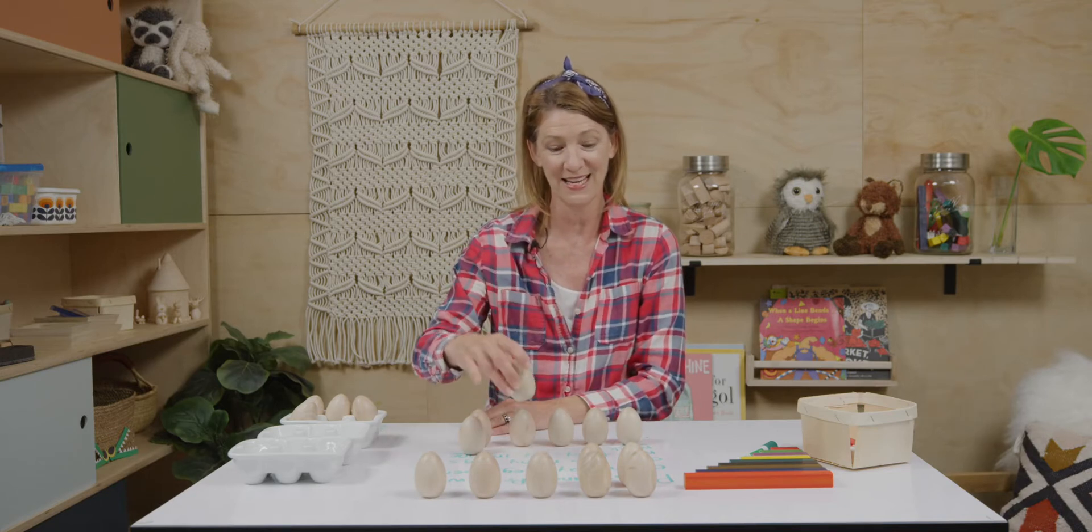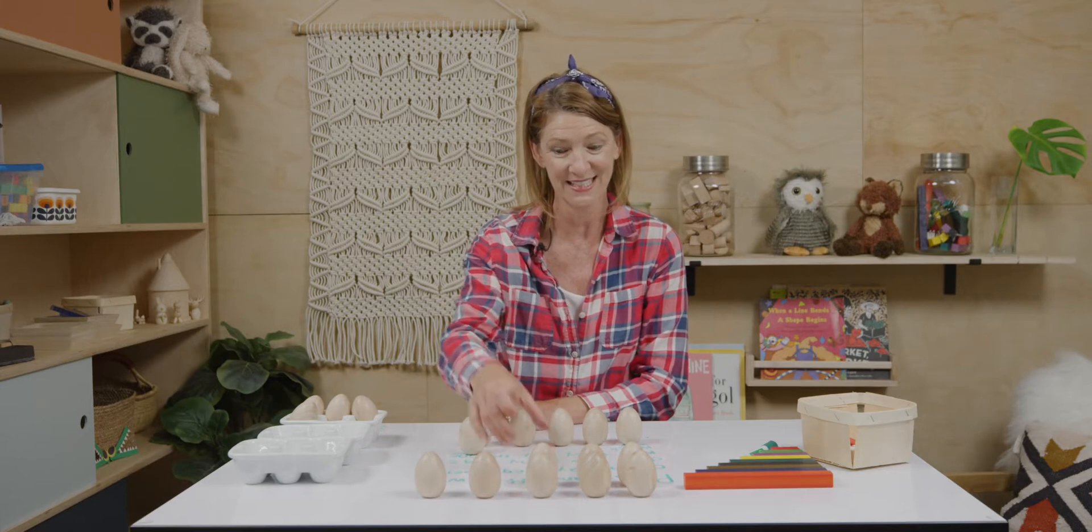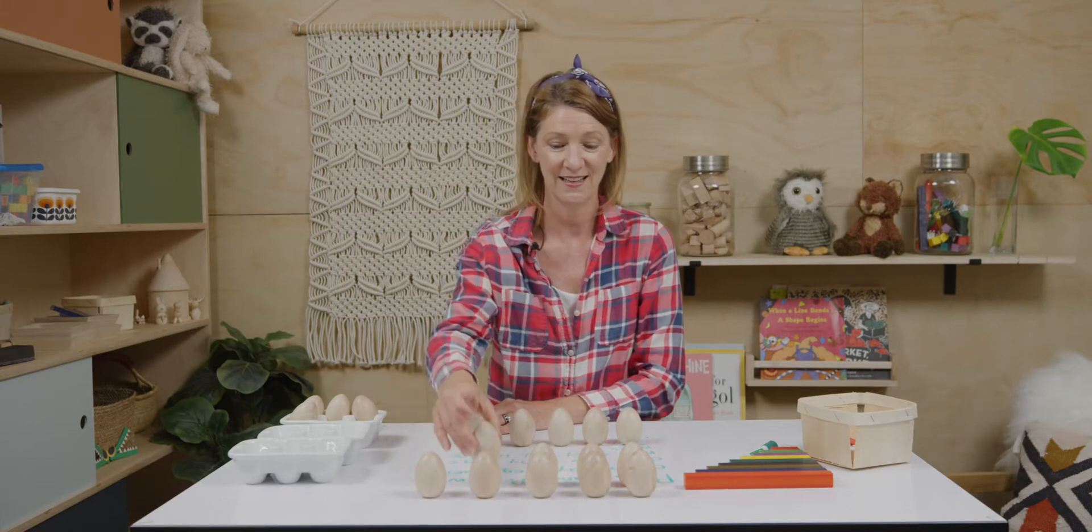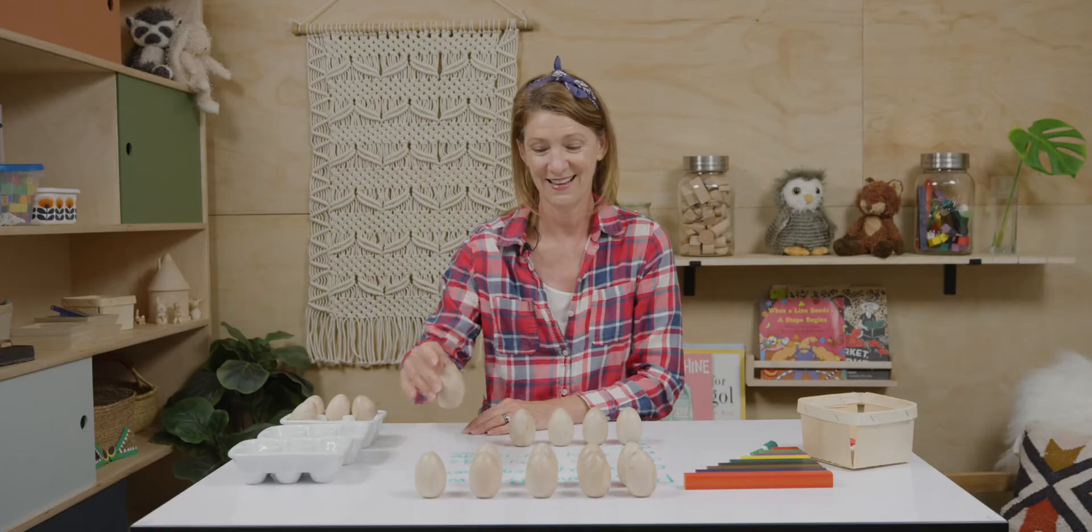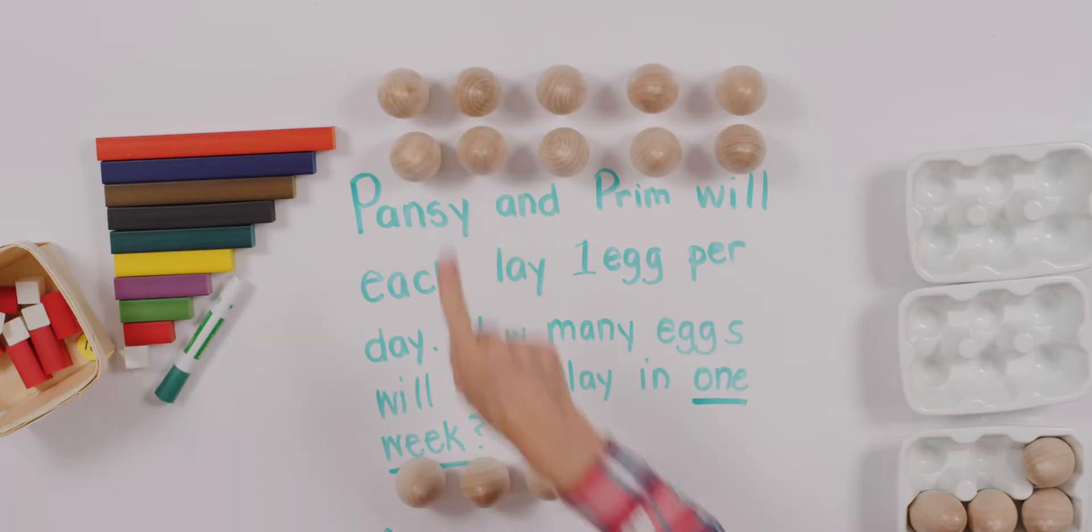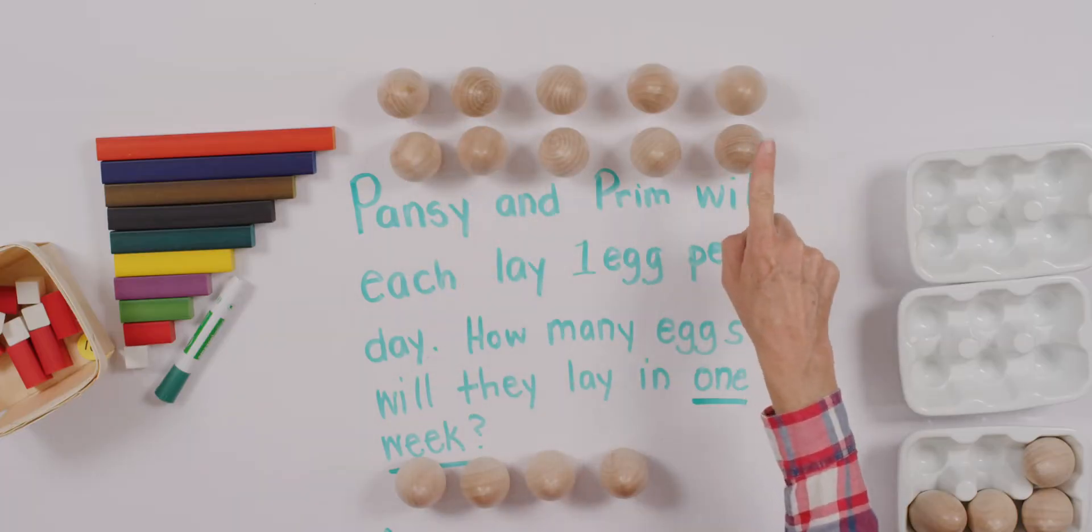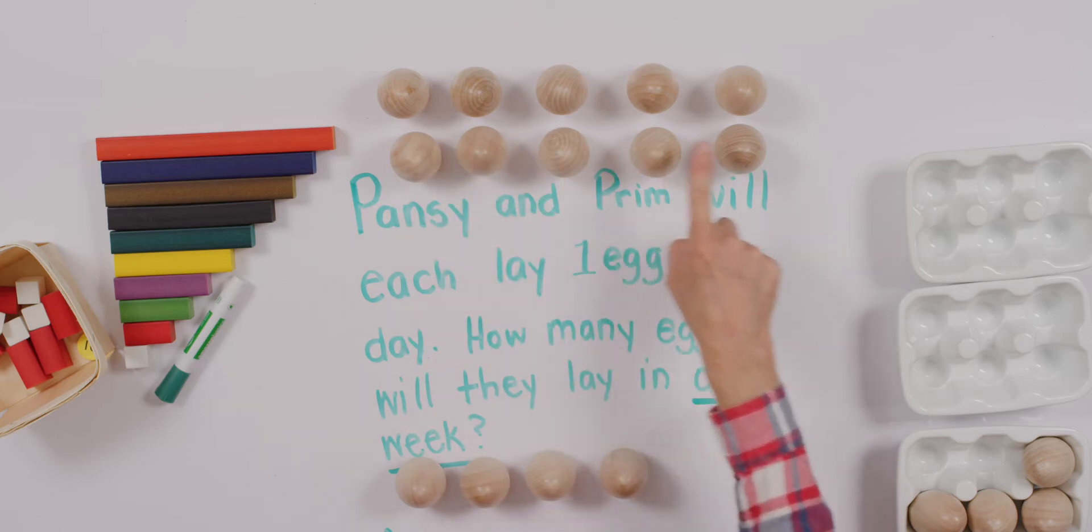So let's take Prim's eggs and add them together with Pansy's eggs until we get ten. All right. We have ten eggs here. Count on with me. Ten. We have to say our big number first. Ten. Eleven. Twelve. Thirteen. Fourteen.